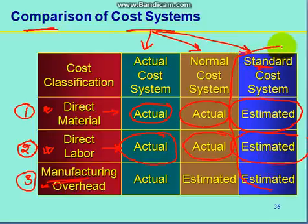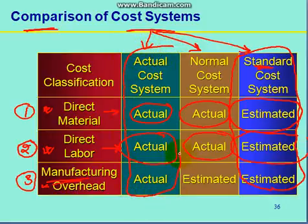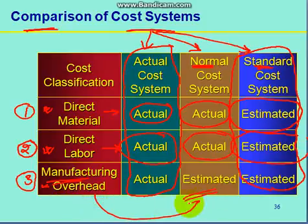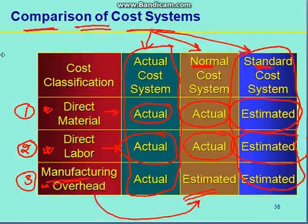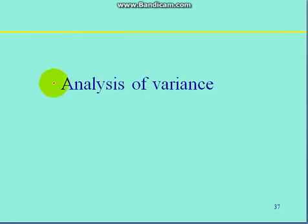All the values of the standard cost system are taken in an estimated manner. In the actual cost system, all values are taken in the actual manner. In the normal cost system, the difference point is that the manufacturing overhead expenses are taken in an estimated manner. This is the comparison of the three different cost systems used in costing techniques. In the upcoming slide, we are going to see the analysis of different kinds of variances.